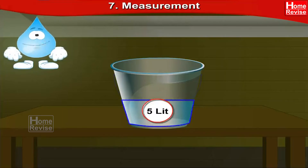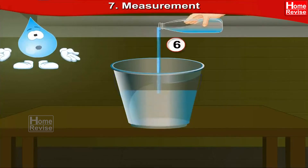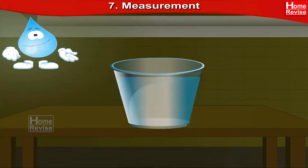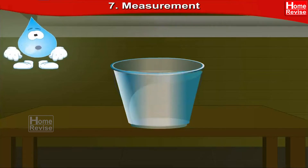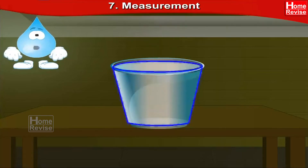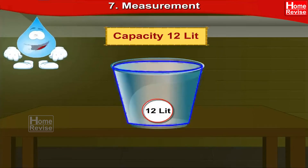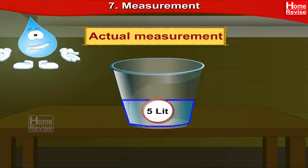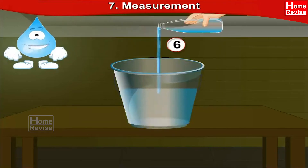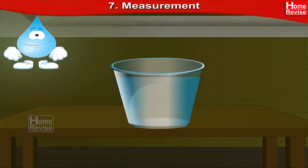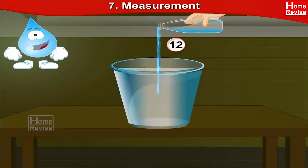Now, children, let us find out how much more water can be added to fill this bucket completely. That would be 12 liters minus 5 liters, which is equal to 7 liters. So 7 liters of more water can be added to fill this bucket completely.